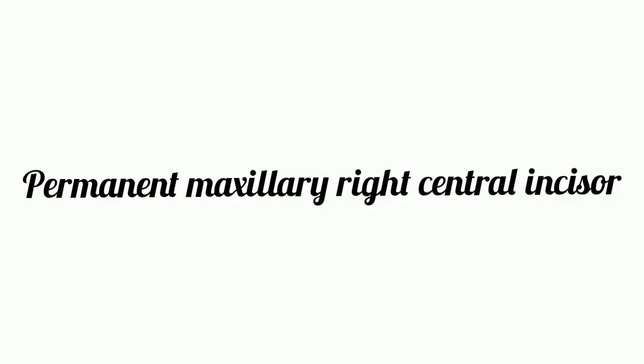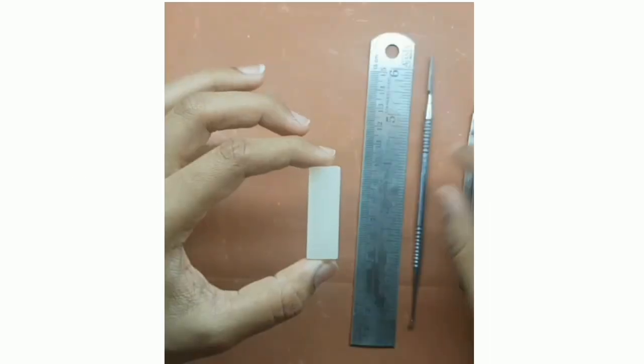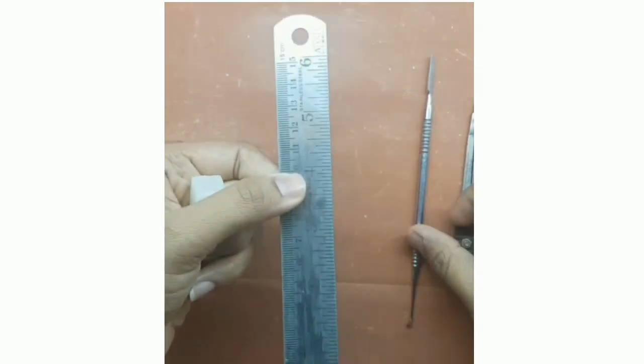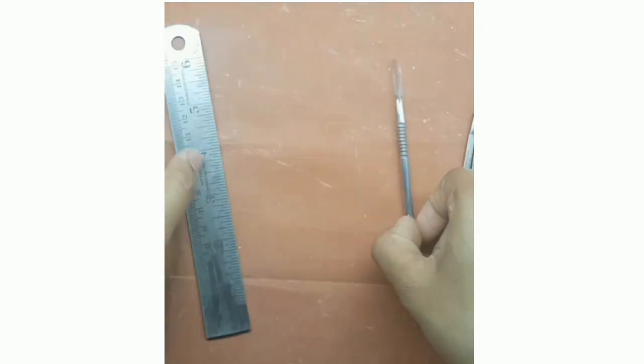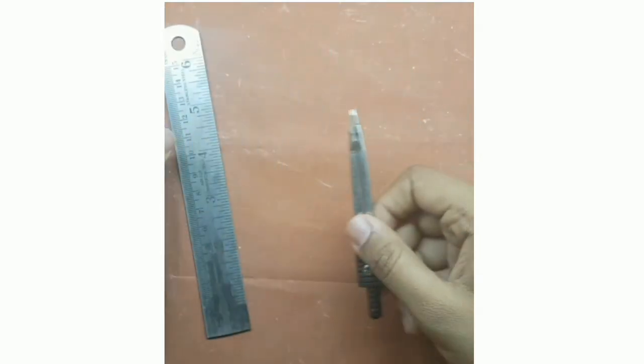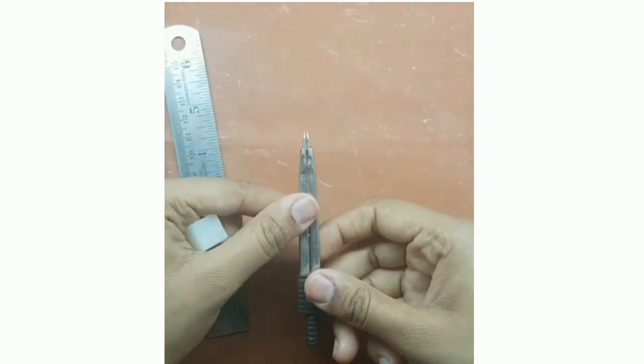The carving of permanent maxillary right central incisor. The materials required are a wax block, a measuring scale, a lecron carver, and a divider.